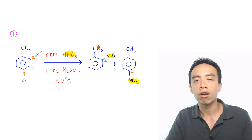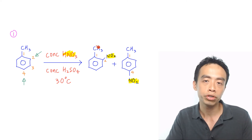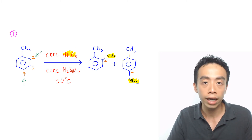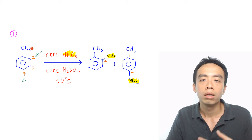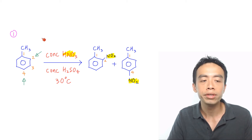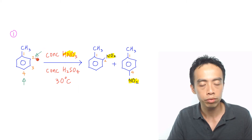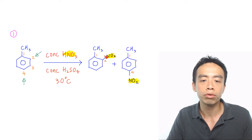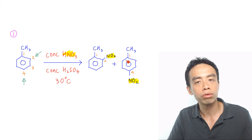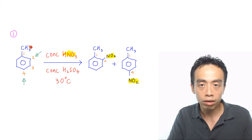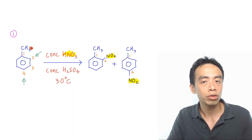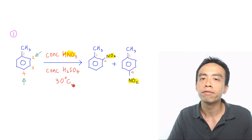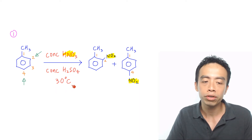The first must-know reaction of methyl benzene is the nitration of methyl benzene. This reaction is done using concentrated HNO3 in concentrated H2SO4 as catalyst at a lower temperature of 30 degrees C. The methyl group is a 2,4-directing group, so it directs the incoming nitro group to position 2 and position 4 relative to itself. Therefore, the products formed are 2-nitromethylbenzene and 4-nitromethylbenzene. The methyl group is also an electron-donating activating group, which is why a slightly lower temperature is required for nitration to take place.